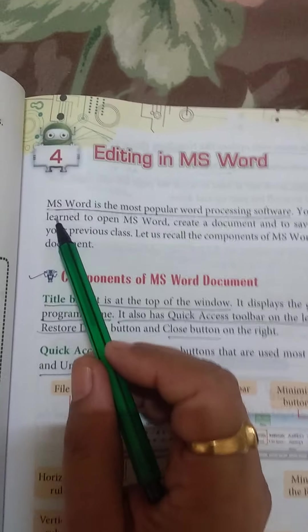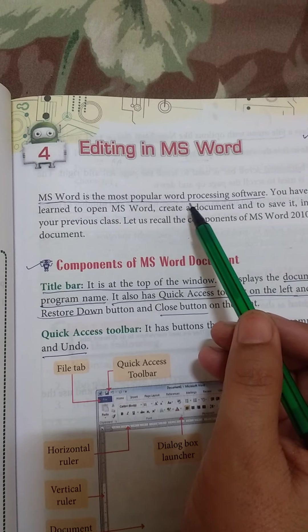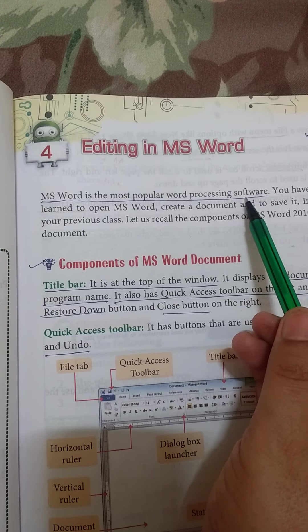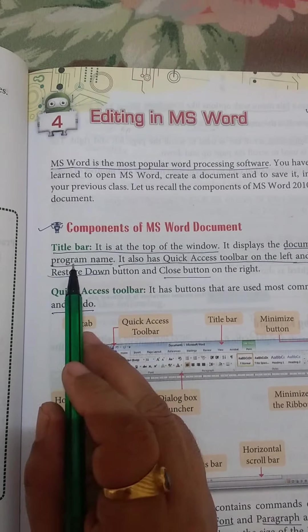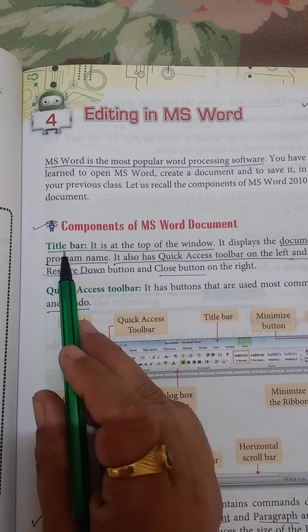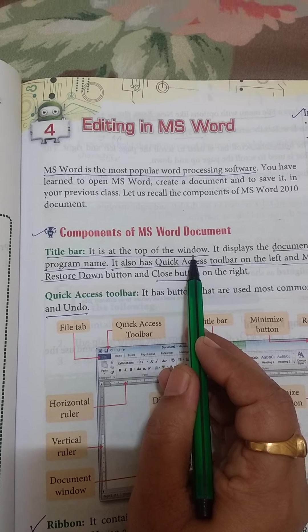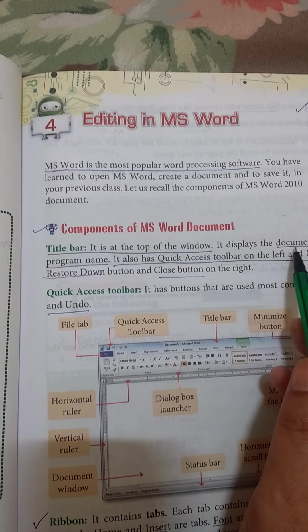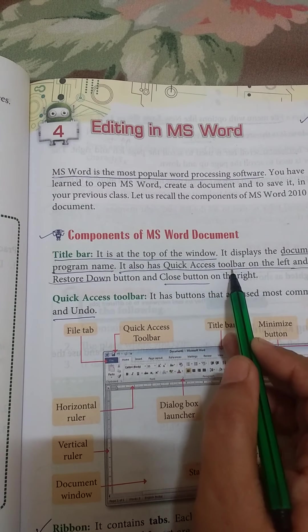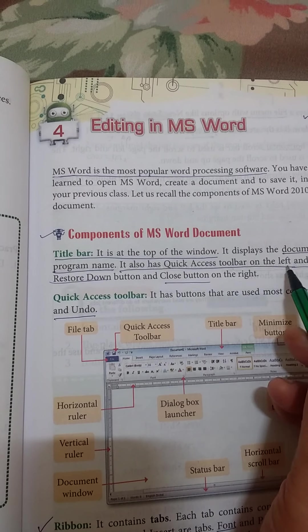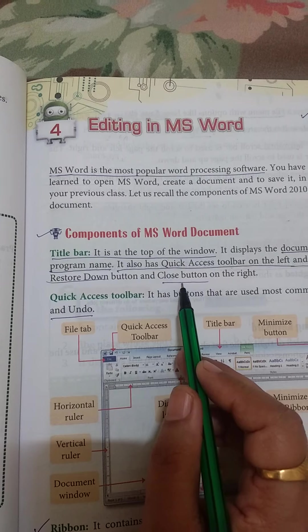MS Word is the most popular word processing software. Components of MS Word include the title bar, which is at the top of the window. It has document name, program name, quick access toolbar on the left end, and minimize button, restore down button, close button.